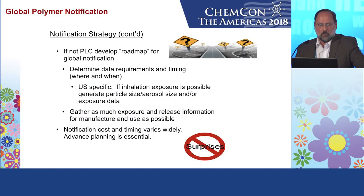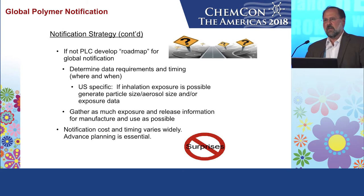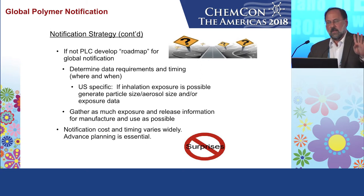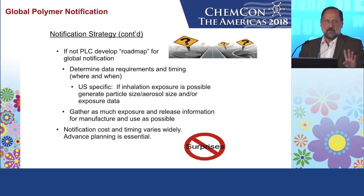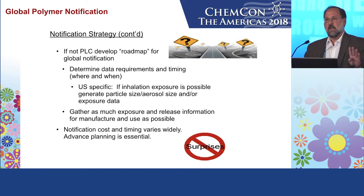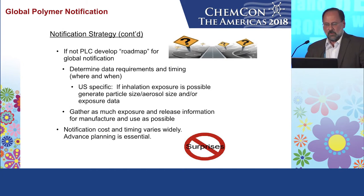If not, do a roadmap for global notification — what do you need and when. Under new TSCA there are four new concern categories for inhalation, and they hit polymers hard. If your polymer has possible inhalation exposure and you're going to do a PMN, generate particle size, air or aerosol size distribution, and/or exposure data — do it upfront, because it's going to save you a lot of hurt. If you don't have enough respirable particles they'll leave you alone, so if your end use has anything to do with potential inhalation, absolutely do that step and gather as much exposure and release information as possible.